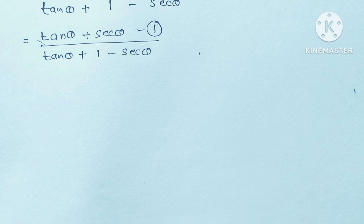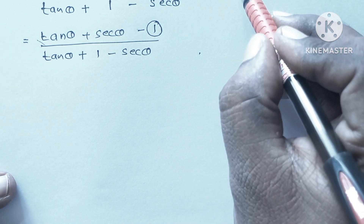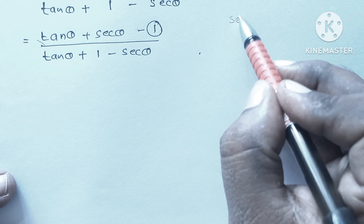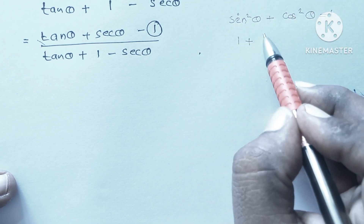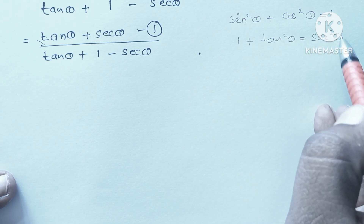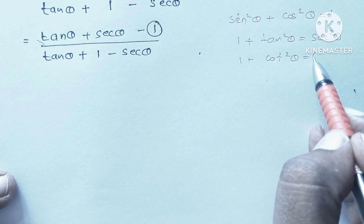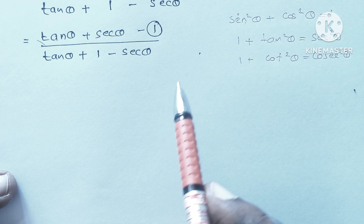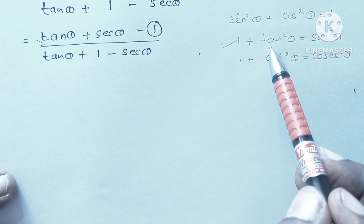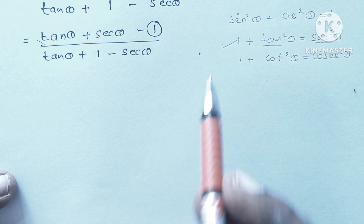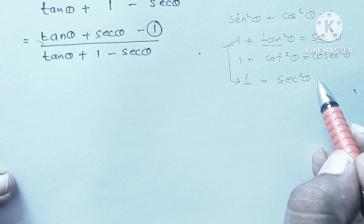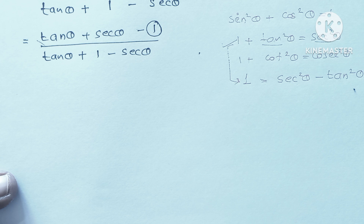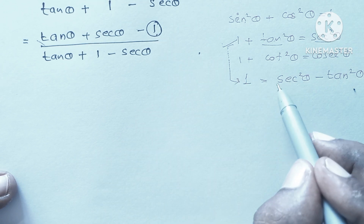You know there are 3 identities in trigonometry: sin²θ + cos²θ = 1; 1 + tan²θ = sec²θ; and 1 + cot²θ = cosec²θ. When you consider these 3 identities, the best suitable one for us is 1 + tan²θ = sec²θ, because it deals with tan θ and sec θ. From this, the value of 1 is sec²θ - tan²θ. So we can replace this 1 in the numerator as sec²θ - tan²θ.